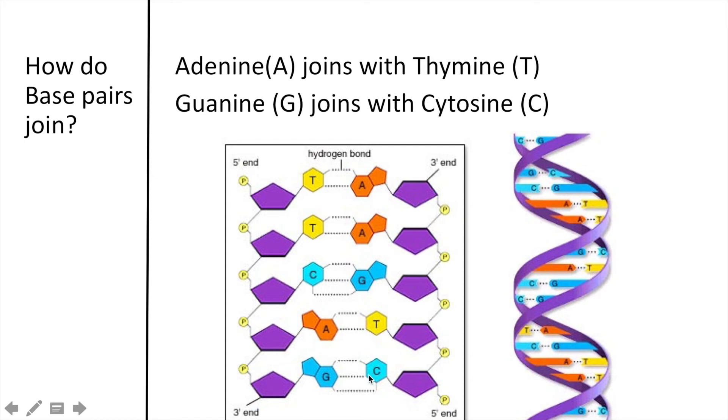We see guanine with cytosine. So these combinations of adenine joining with thymine, guanine joining with cytosine, on either side of the ladder, this is what creates all the variation we see in the world today.